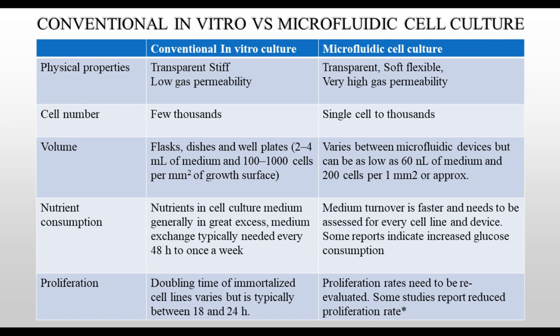Let us see the differences between in vitro culture and microfluidic cell culture systems. In in vitro systems, the cell substrate is transparent, stiff, and has low gas permeability, while in microfluidic systems the substrate is soft, flexible, and has high gas permeability. In microfluidic systems, cells can be handled and cultured ranging from single to thousands of cells, which is not possible in plate-based assays. Conventional culture requires larger volumes compared to microfluidic devices, which can work with volumes as small as 60 nanoliters. Nutrients in traditional culture are in great excess and media needs changing every 48 hours, while in microfluidic systems media turnover is faster with reports of more glucose consumption.